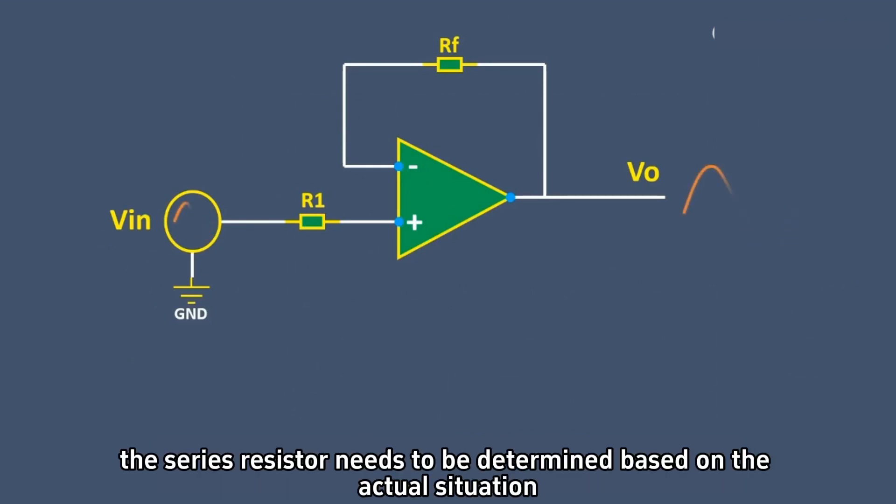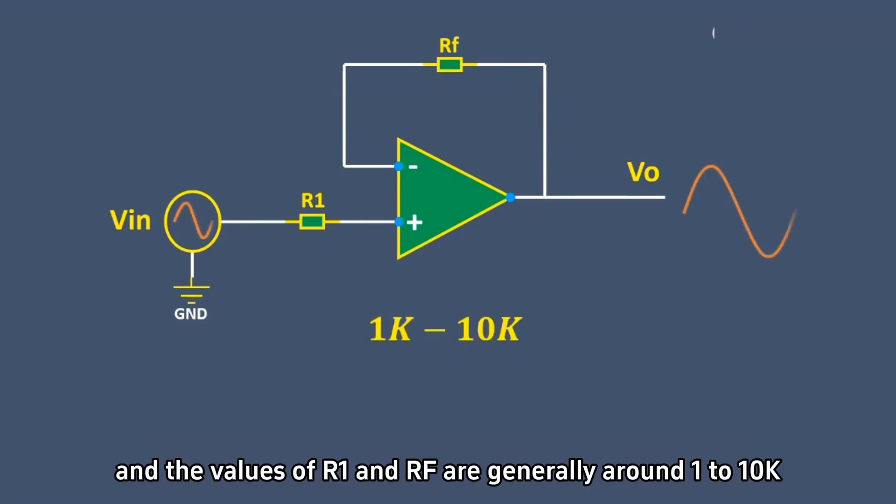Therefore, the series resistor needs to be determined based on the actual situation, and the values of R1 and Rf are generally around 1 to 10k.